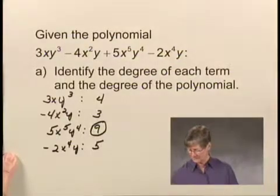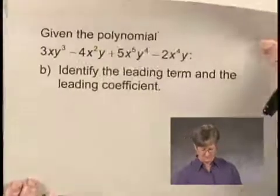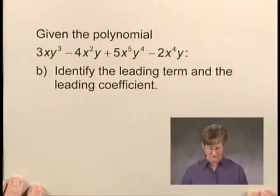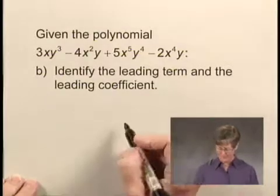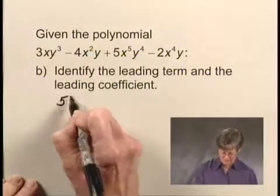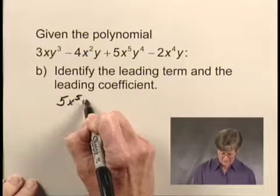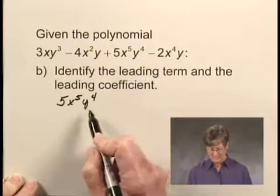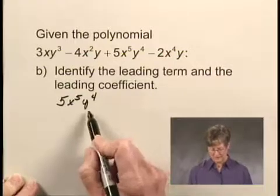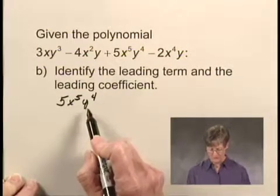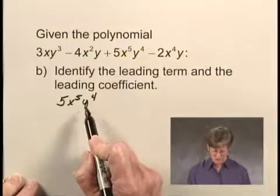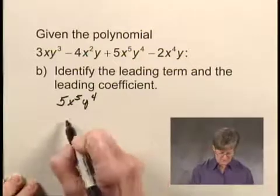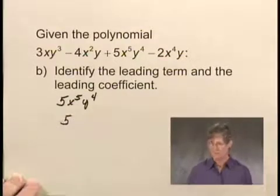Now, still considering the same polynomial, we want to identify the leading term and the leading coefficient. Remember from what we just did, the term 5x to the fifth y to the fourth was the term of highest degree — the ninth degree term — so that means this is the leading term. And the leading coefficient is the coefficient of this term, so the leading coefficient is 5.